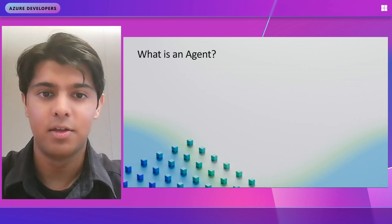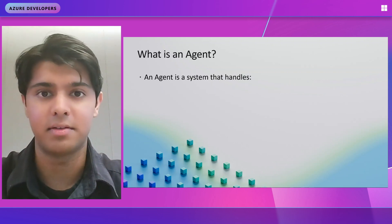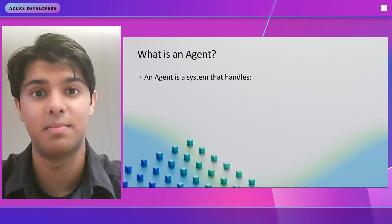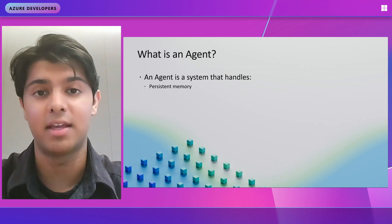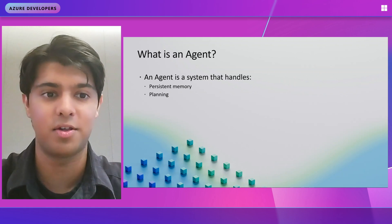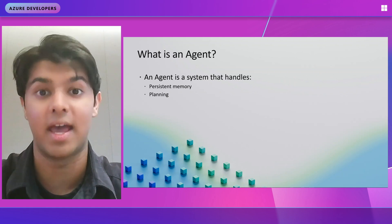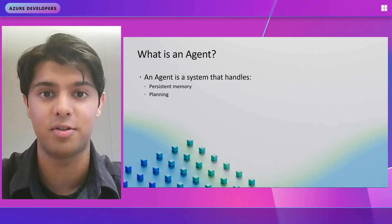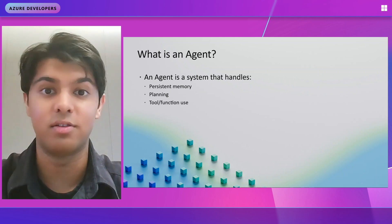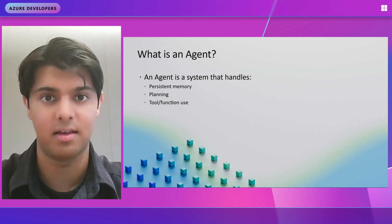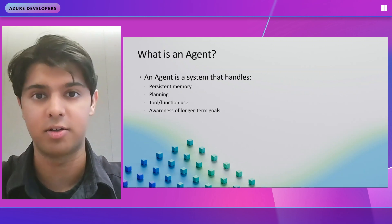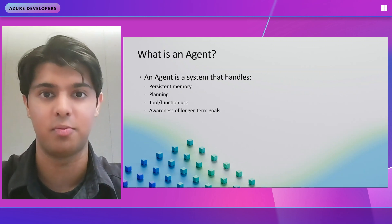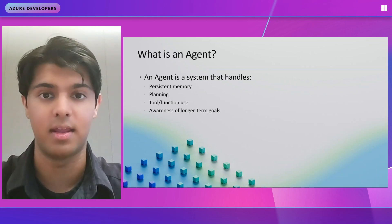What is an agent? An agent is a system that handles a lot of things. First, it handles persistent memory — it remembers certain things. Then it has planning, so on top of basic generation, there is a plan to execute and perform operations. Third, like we just covered, there's tool or function use — actual functionality that the agent can perform. And lastly, there's awareness of longer-term goals. Nothing operates in a vacuum; it's all contained within an agent.